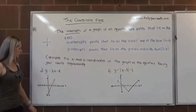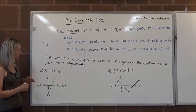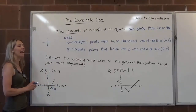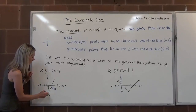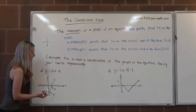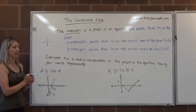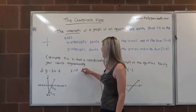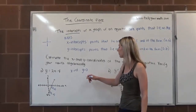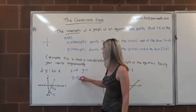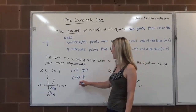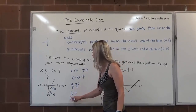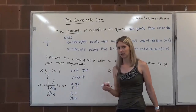Our first example is y equals 2x minus 4. Looking for the x-intercept — where does this line cross the x-axis? It looks like right here at the point (2, 0). We believe the y-intercept is down at negative 4. To verify the x-intercept algebraically, we substitute in 0 for y: 0 equals 2x minus 4. Adding 4 to both sides, then dividing by 2, we get x equals 2 — that's the ordered pair (2, 0), which is what we guessed.